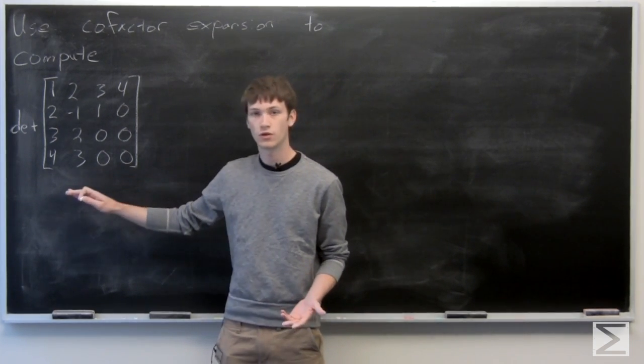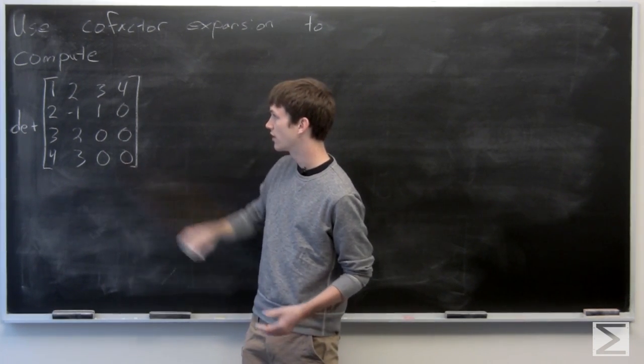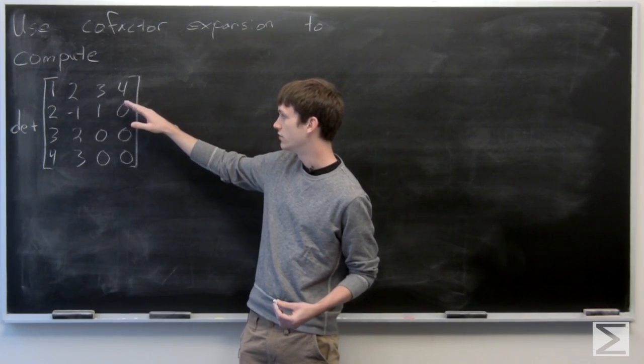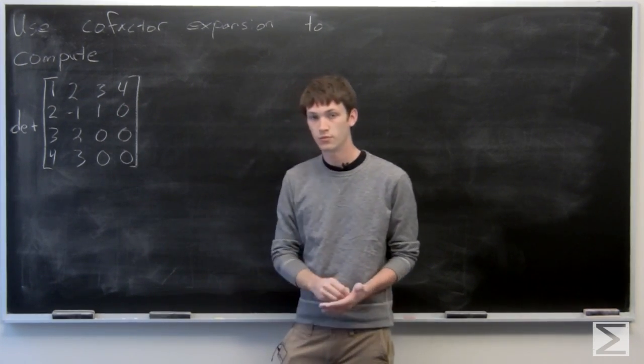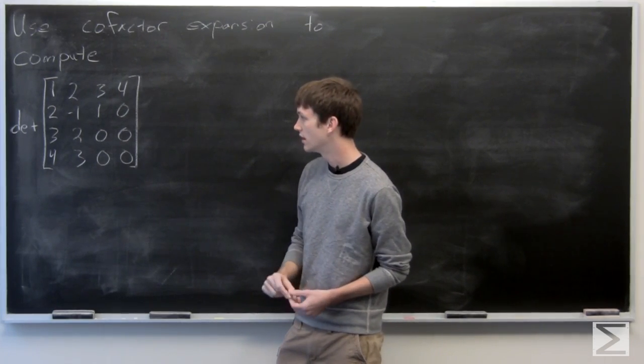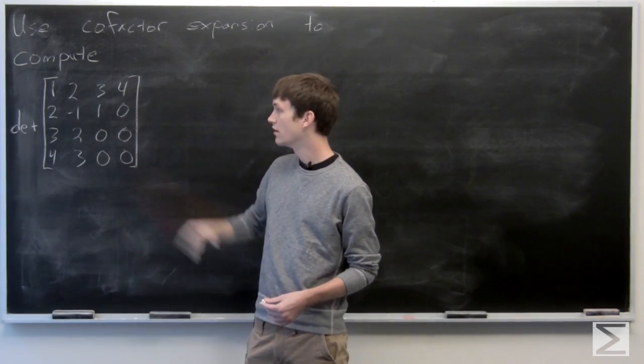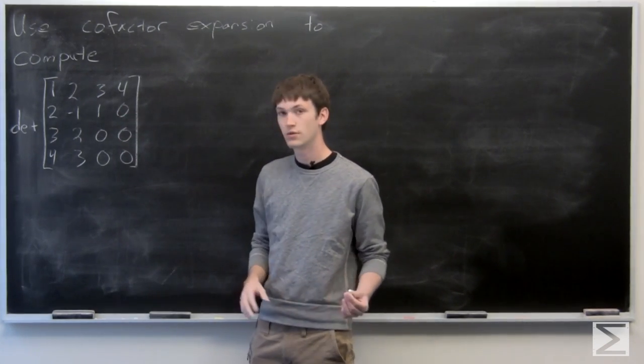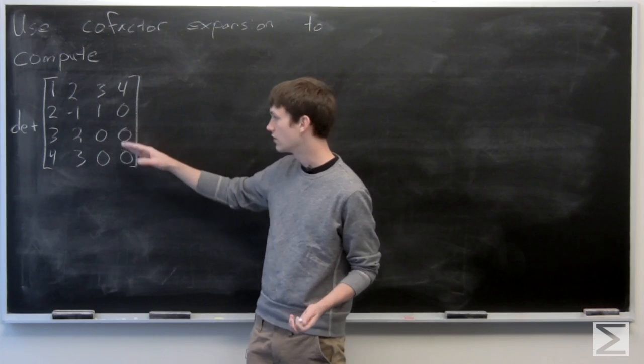So first, when we're looking for cofactor expansion, we want to figure out which would be easiest. And it looks like going along column number 4 would be easiest, since 0 times all of those determinants will be 0.